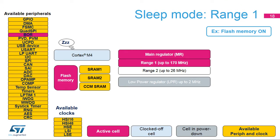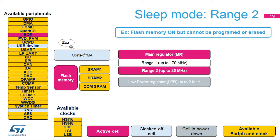In sleep mode, the CPU clocks are off. In range 1, the system clock is up to 170 MHz. In range 2, it is up to 26 MHz. By default, the SRAM clocks are enabled and they can be individually gated off during sleep mode by software. All peripherals can be activated in range 1. In sleep mode range 2, all peripherals can be activated except the USB device and random number generator.